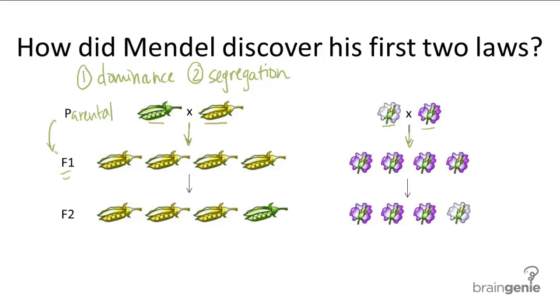So when Mendel first observed this, he thought, oh, maybe those traits just disappeared altogether. And that's why they didn't appear in the offspring.